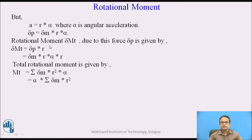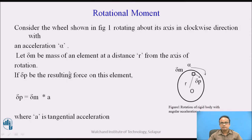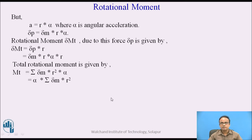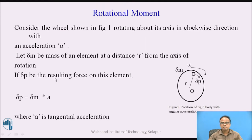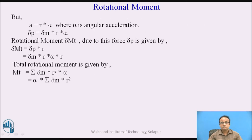Now the rotational moment delta mt for the mass element delta m — what is the rotational moment? It is given by force into the distance r from the axis of rotation. So delta mt is equal to delta p into r, which gives delta m into r into alpha into r. We substitute the value of delta p as delta m into r into alpha in the expression for delta mt.